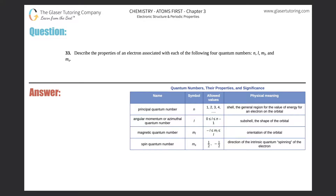Number 33: describe the properties of an electron associated with each of the following four quantum numbers — n, l, ml, and ms. In the last question, number 32, we described how to find the actual numbers for these four quantum numbers. Go back to number 32 for that. This question is about what these four quantum numbers actually mean.